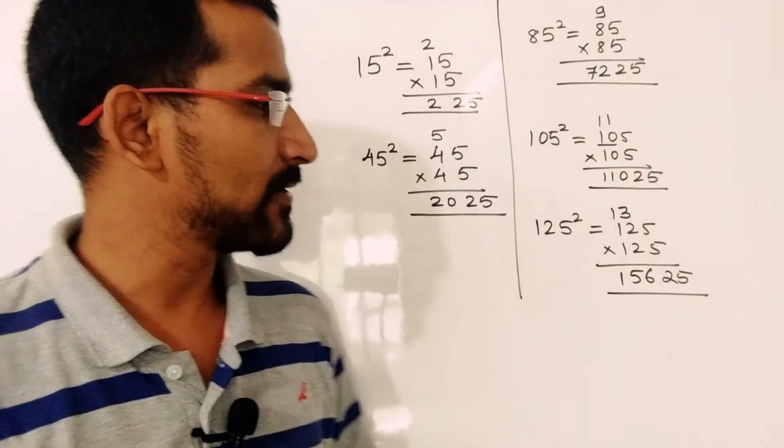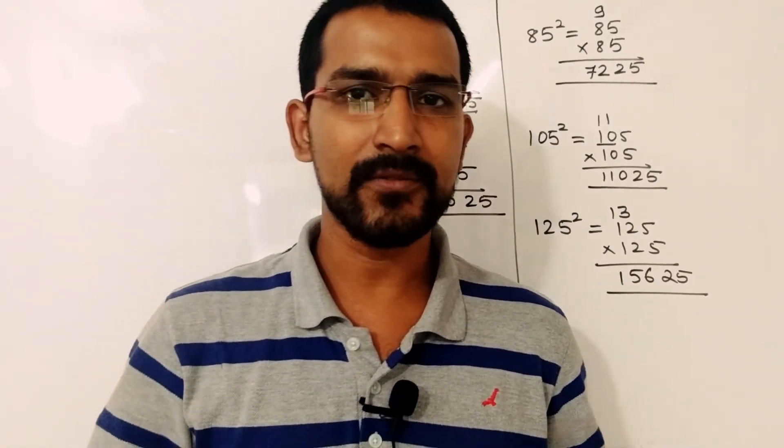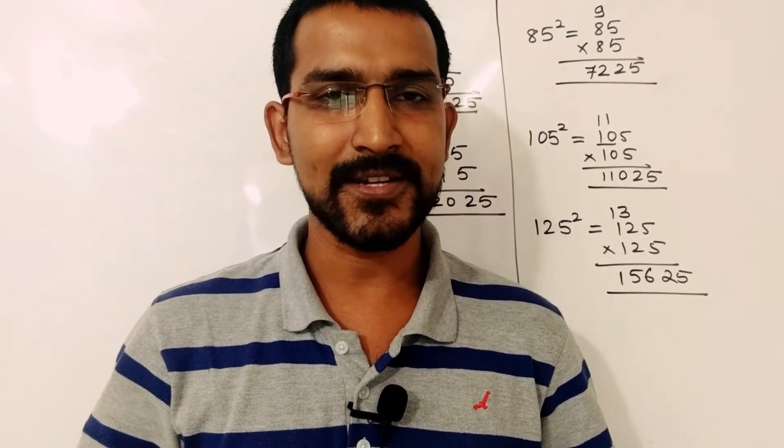So this is how we can calculate the square of any number that ends with 5. I hope it will be helpful for your fast calculation. Thank you.